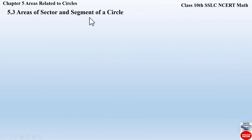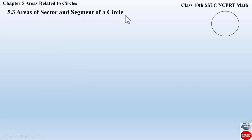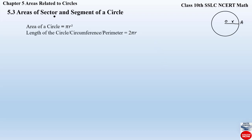Now let us begin with the video. Section 5.3: Areas of Sector and Segment of a Circle, from Chapter 5: Areas Related to Circles. In this section we will be finding out how to determine areas of sector and segment in a circle. Let us consider a circle whose center is O and it has a radius r. The circumference is denoted by 2πr. We have already learned how to find the area of a circle, which is πr².